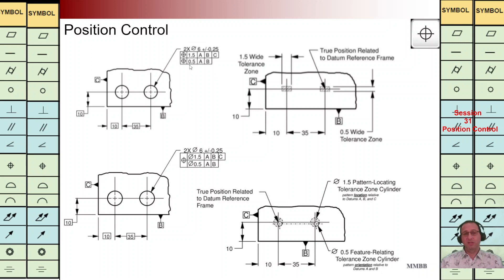For the second FCF, we are going to make more limitation. TZ is 0.5 and it should be perpendicular to A. We are going to have an offset with respect to B of 0.5. That's why we are going to have these two hash areas — the center of the holes should be within those dimension areas.